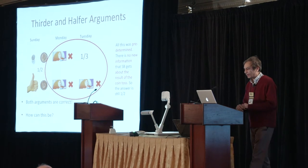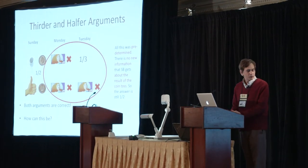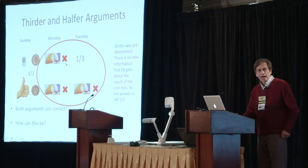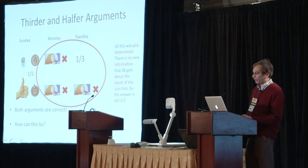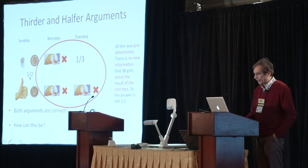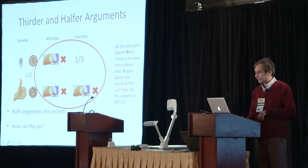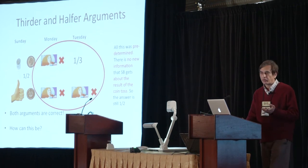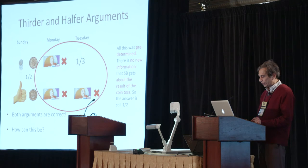So what are the thirder and halfer arguments? What the thirders say is that these three events are independent, they are indistinguishable to Sleeping Beauty because she's amnesic, and they're equiprobable. And only one of them is heads, so the answer is one third. What the halfers say is that the original probability of the coin being a fair coin is half heads. All that happens in this experiment is predetermined — it gives no new information about what actually happened in the coin toss. Therefore, the probability should remain half because there's no new information.